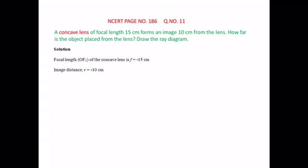u is negative, f is negative, v will also be negative. In this question, we are given focal length as 15 centimeter with minus sign convention. Image distance is given in this question, denoted by v, and it is minus 10 centimeter.